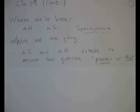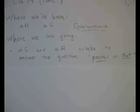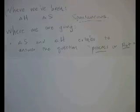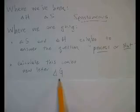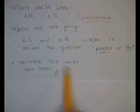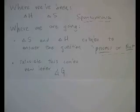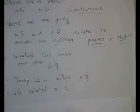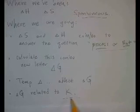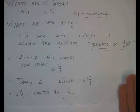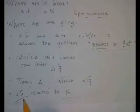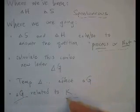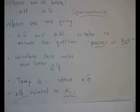First of all, delta H and delta S combine together to answer the question: spontaneous process or not? Secondly, we're going to calculate the combination of S and H together in this new letter called delta G, which is known as the Gibbs free energy. Thirdly, we're going to look at temperature and how it affects G and whether the process is spontaneous. And fourthly, we're going to relate G to the equilibrium constant, because G tells us if a reaction will move from one side to the other, while K tells us how far it moves.